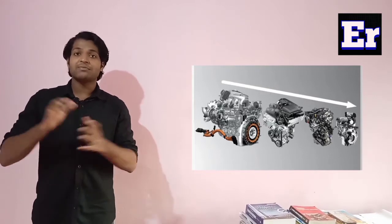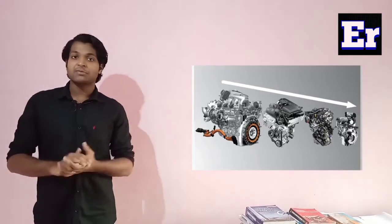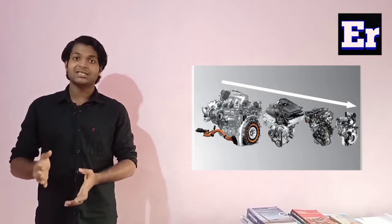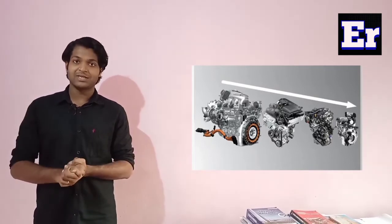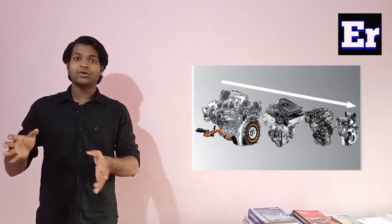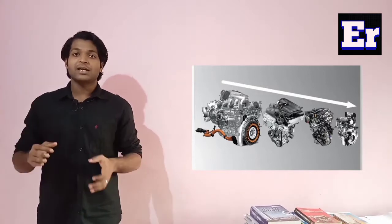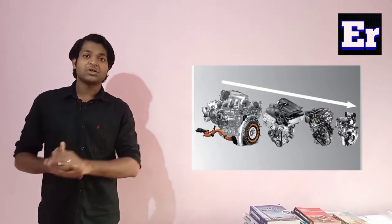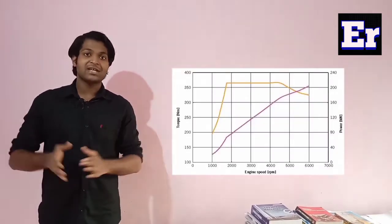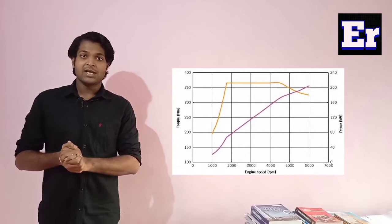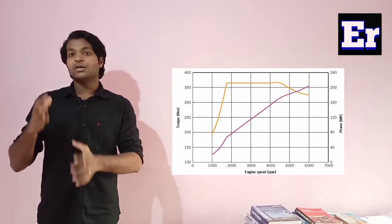If we look at the current market, we can see lots of turbocharged GDI engines of smaller displacement. If you look at the table, you can find that the brake mean effective pressure, the horsepower, and the torque all remain the same as a naturally aspirated engine with a much larger displacement.